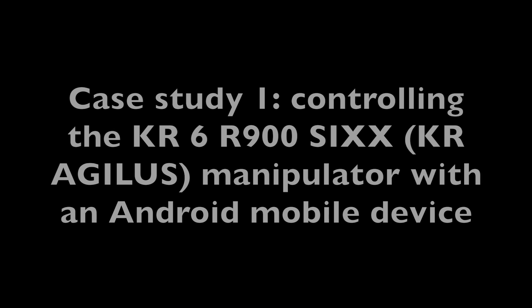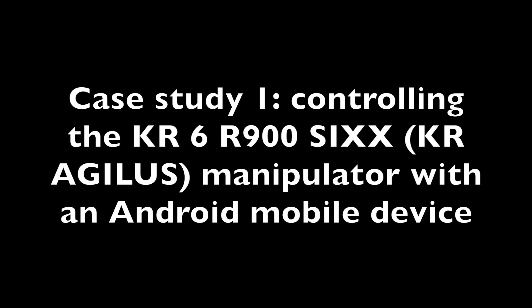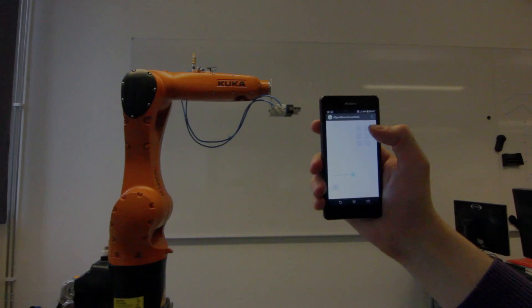In the first case study, JOpenShowVar is used to control a KUKA KR Agilis robot with an Android mobile device.